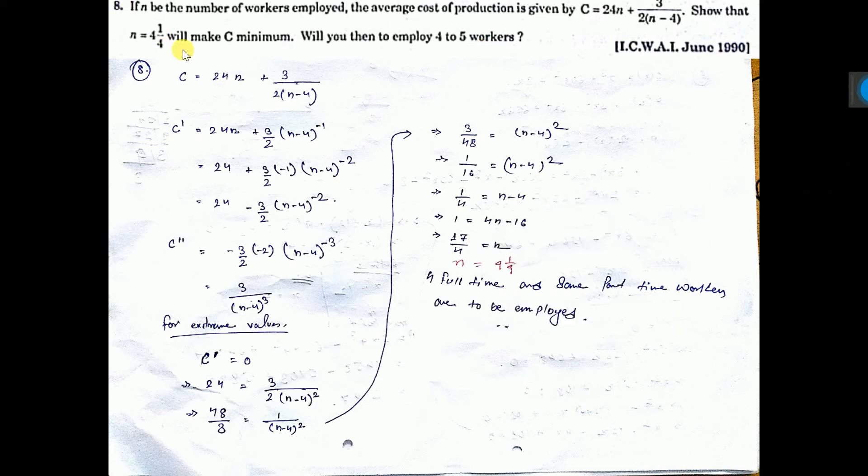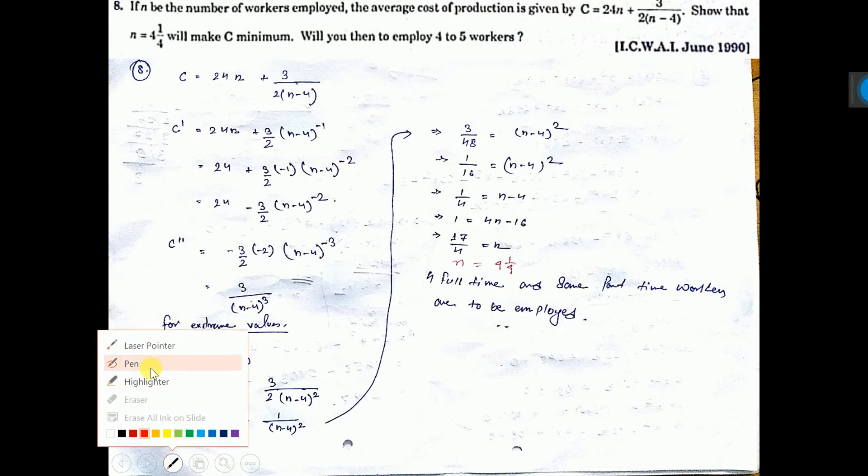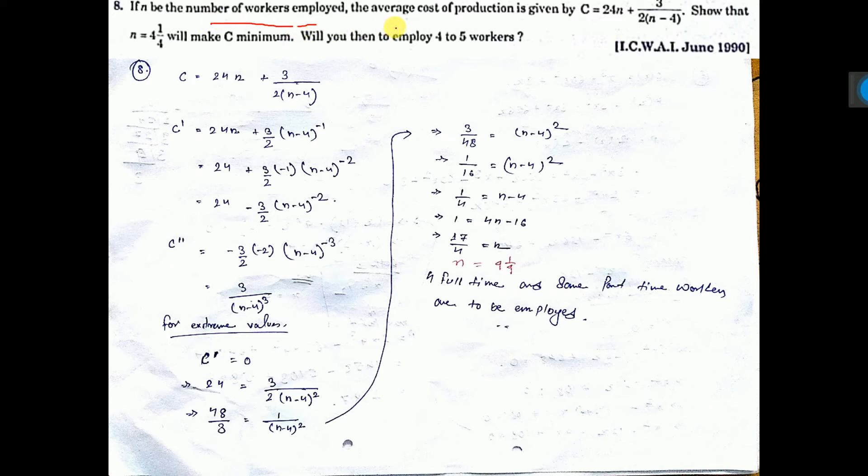Number 8. If N be the number of workers employed, the average cost of production is given by C equals this, so that N equal to this will make C minimum. Will you then employ 4 or 5 workers?